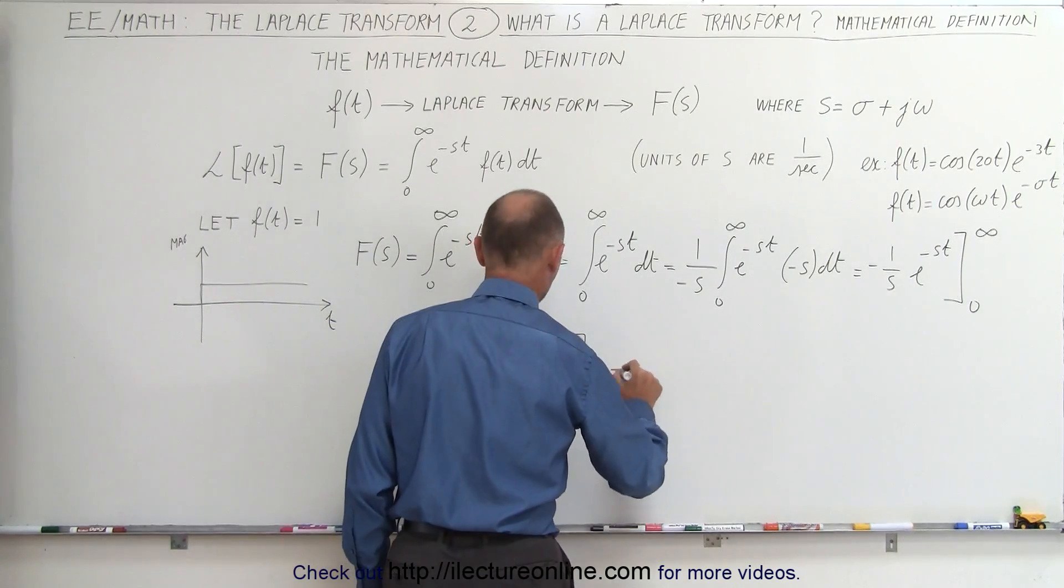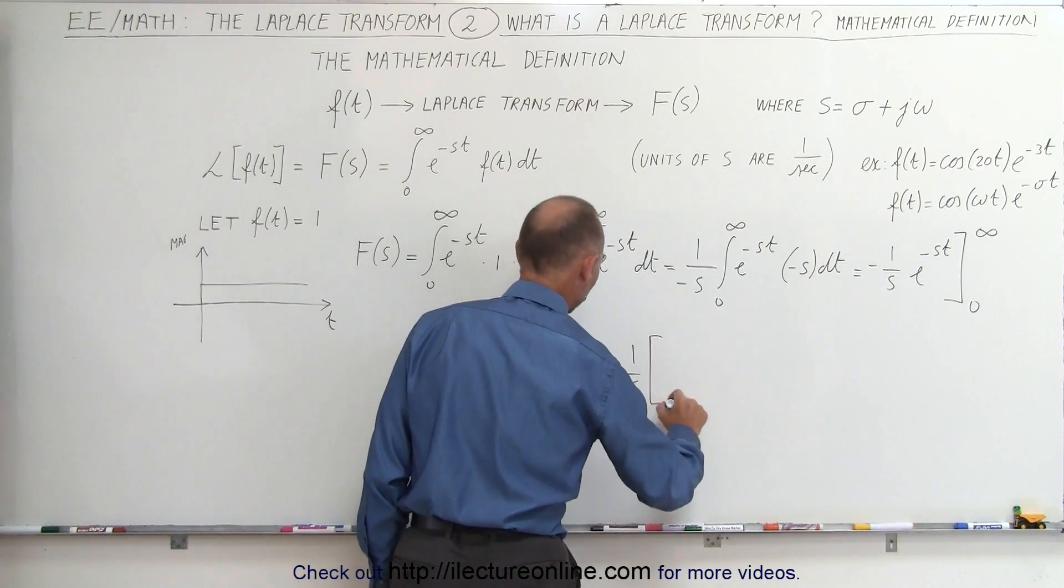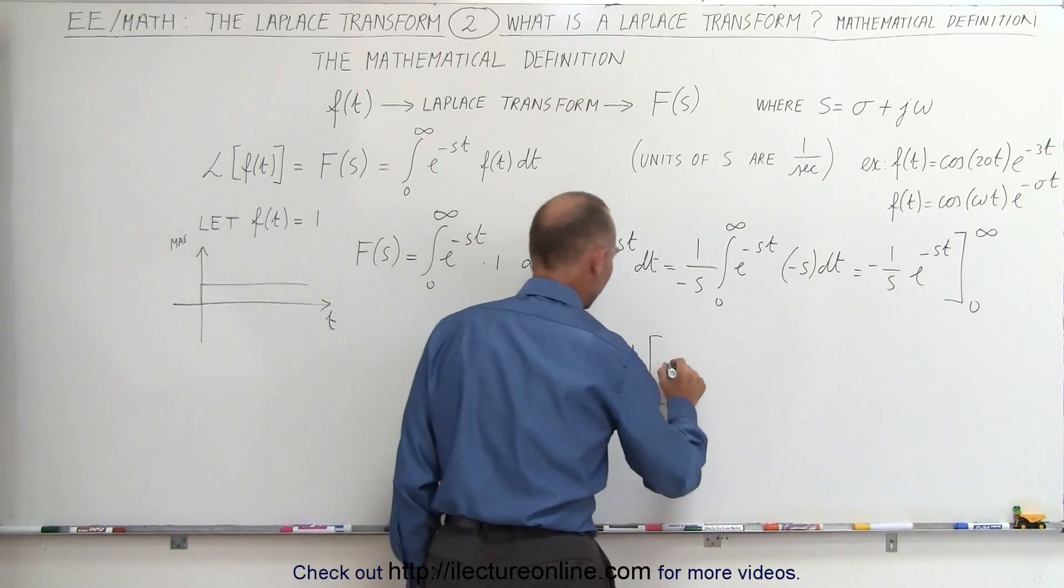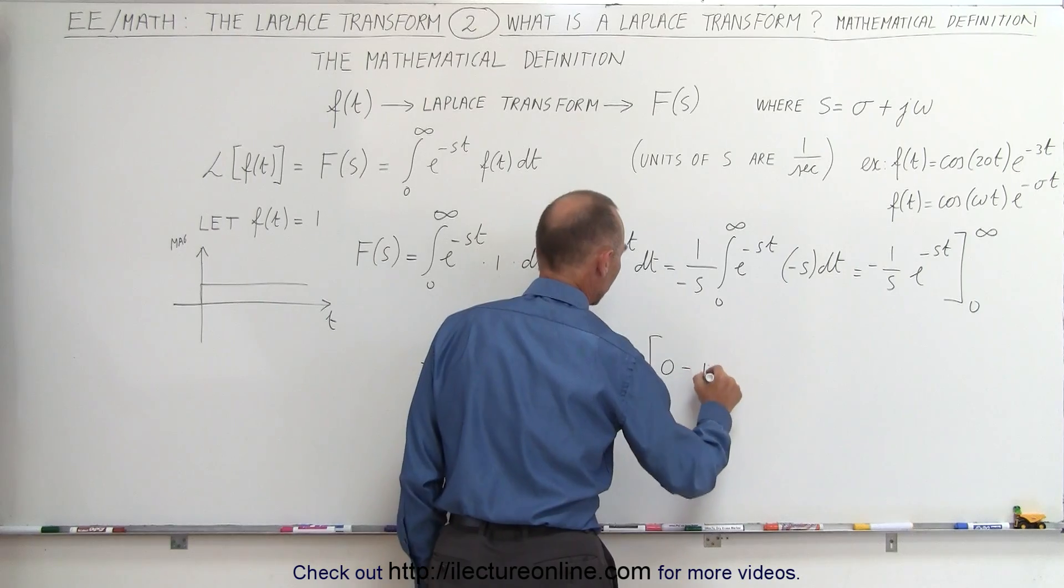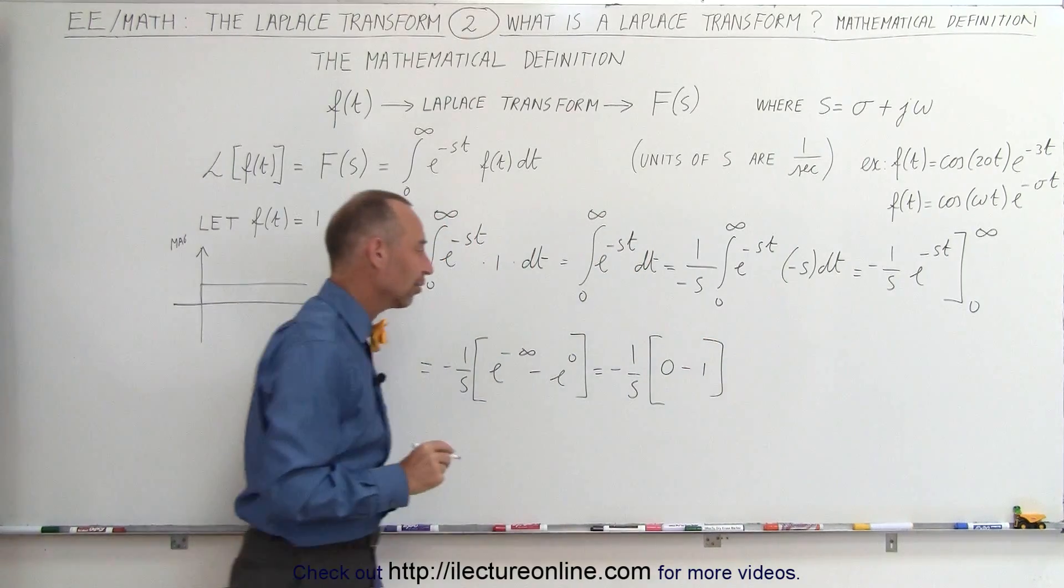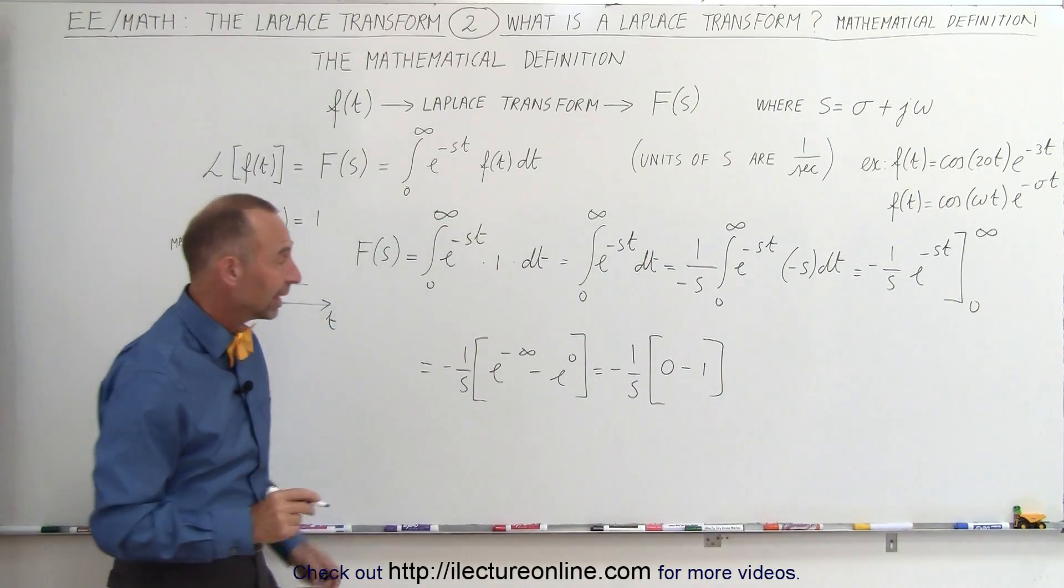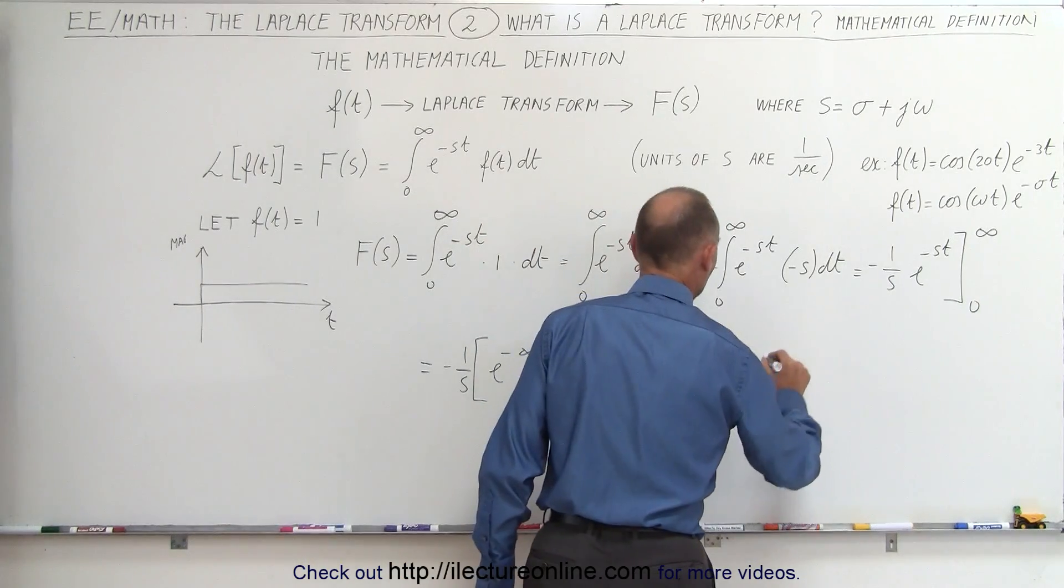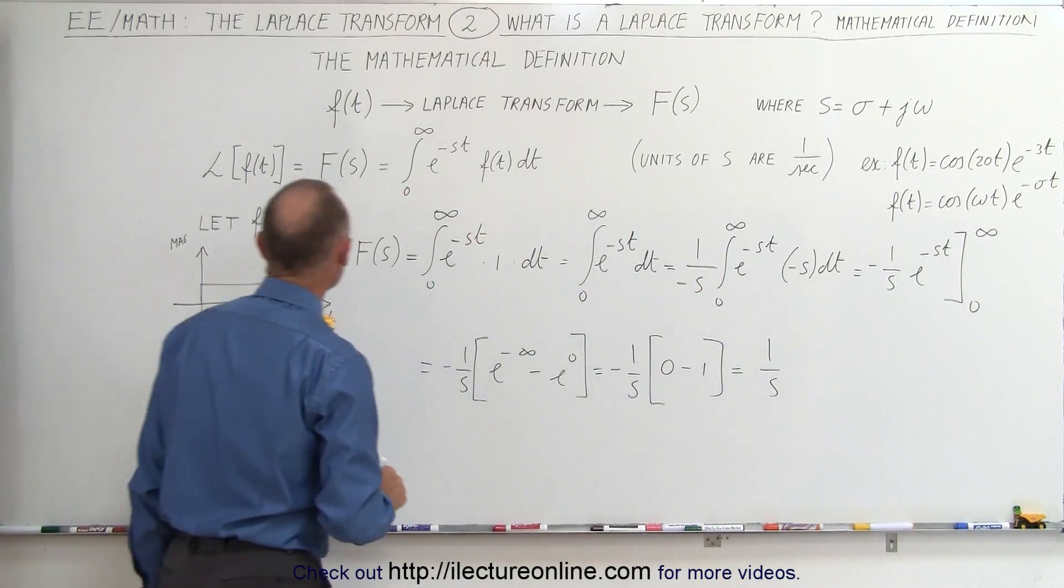Well, this becomes equal to minus 1 over s. E to the minus infinity is simply 0, minus 1, because anything to the 0 power is always 1. Then the ones negate one another, and this becomes equal to 1 over s.